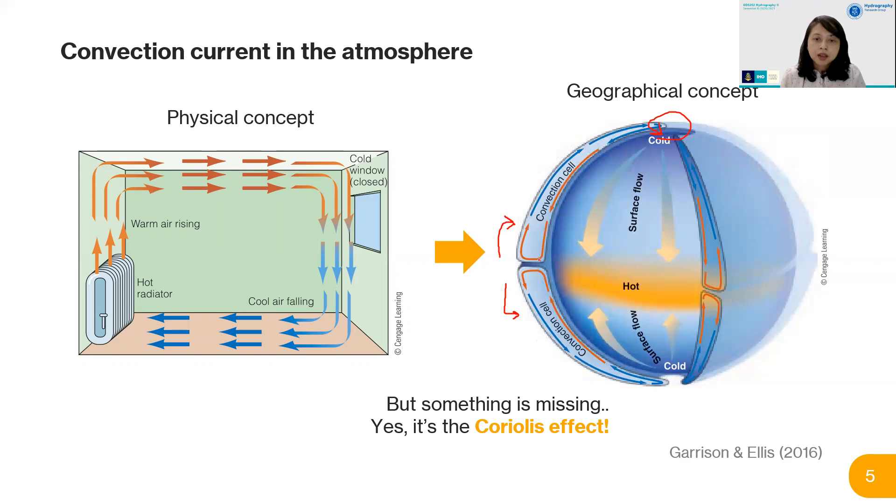The same happens at the poles—air falling there doesn't go all the way to the equator but deflects up and goes back again. Now you've got two cells. What is happening in the middle?